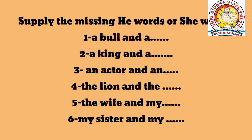Supply the missing He-words and She-words. If a He-word is given, you should write the She-word, and if a She-word is given, you should write the He-word. For example: wife, then husband; sister, then brother. This way you should write them down.